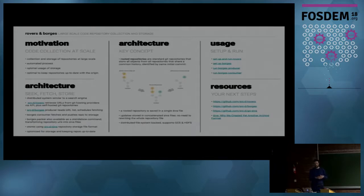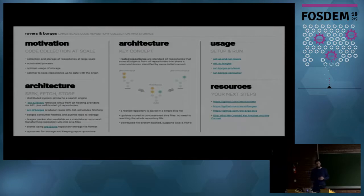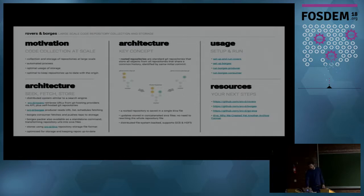There are two separate programs: one to find the URLs of Git repositories and store them in a database, and a second to schedule their cloning. These are called the Rovers and Borges components. There are hundreds of millions of Git repositories, so we want to be space-efficient. One nice trick is to store forks together in a single Git repository, because we have an extensible Git library. This is the concept of rooted repositories — repositories that share history starting with the same initial commit hash get stored in a single large repository.